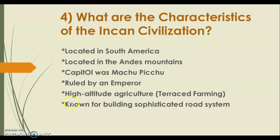The capital of the Incan civilization was Machu Picchu. They were also ruled by an emperor, similar to the Mayans. Their economy was based on high-altitude agriculture, also called terraced farming, because they lived in the mountains. They had to figure out how to farm on mountains — the Incans invented terrace farming, a key word you must know for the SOL. They were also known for building sophisticated roads.